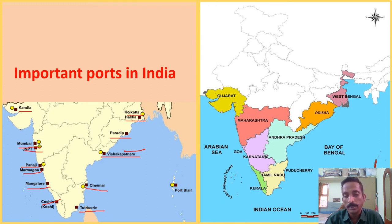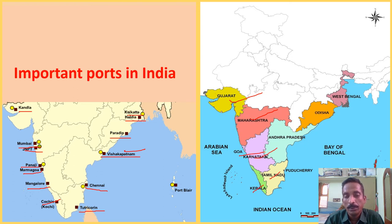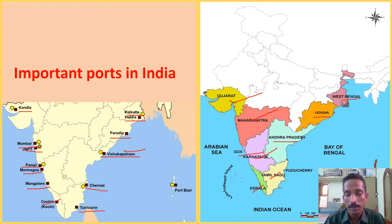In total, there are nine states with coastal plains on both the western and eastern sides: Gujarat, Maharashtra, Goa, Karnataka, Kerala, Tamil Nadu, Andhra Pradesh, Odisha, and West Bengal.